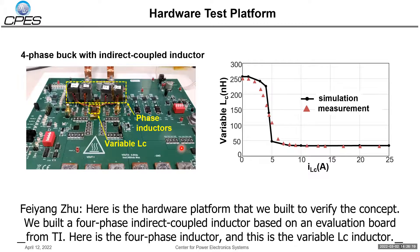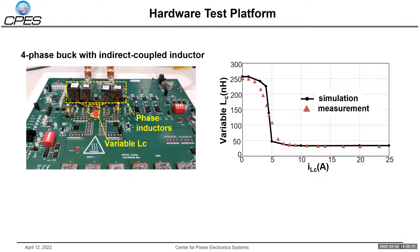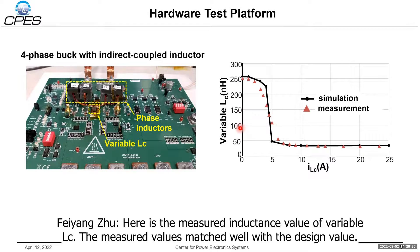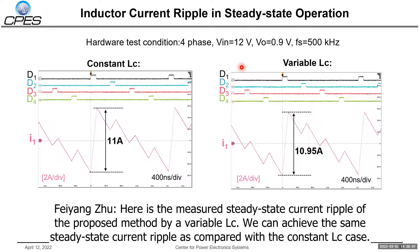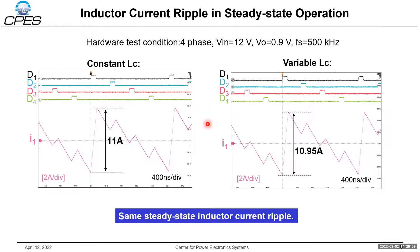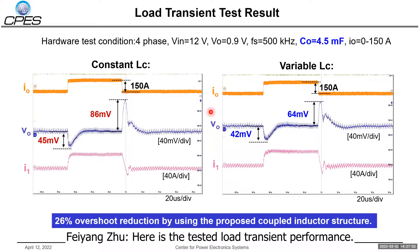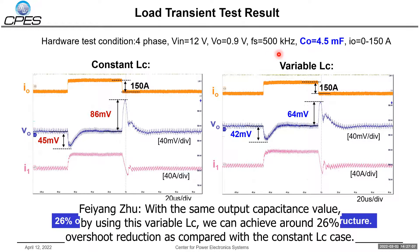Here is the hardware platform built to verify the concept. We built a four-phase indirect coupling inductor based on an evaluation board from TI. Here is the four-phase inductor and the variable LC inductor. The measured inductance of the variable LC matches the design value very well. The measured static current ripple of the proposed method with variable LC achieves the same static current ripple as the constant LC case. For the load transient performance with the same output capacitance value, using this variable LC achieves around 26% overshoot reduction compared with the constant LC case.